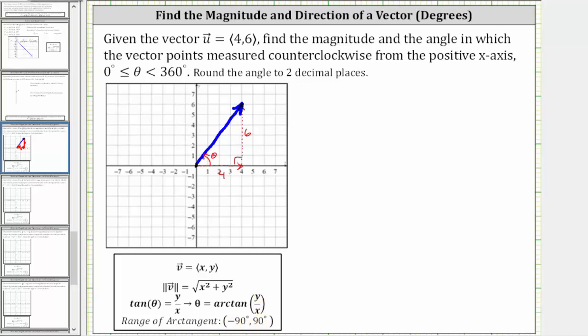Let's begin by determining the magnitude, which is indicated using double vertical bars. We have ||u|| equals the square root of x squared plus y squared, or in our case,